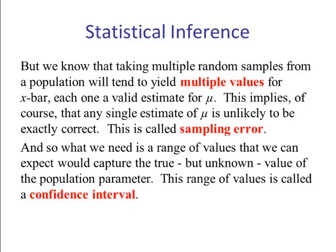Just as we've seen in section 9.1 on estimating population proportion, we know that taking multiple random samples from a population will tend to yield multiple values of x-bar. Each one is a valid estimate for mu.